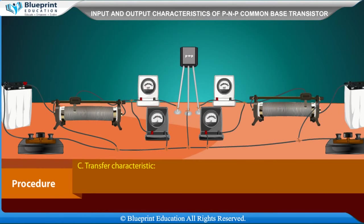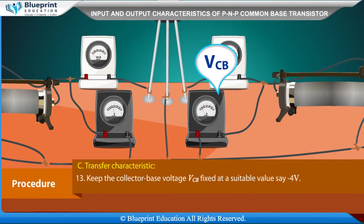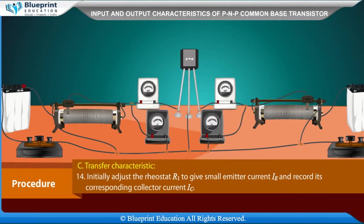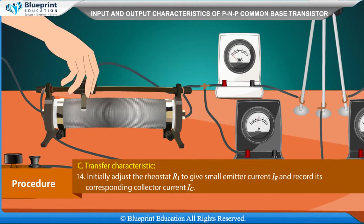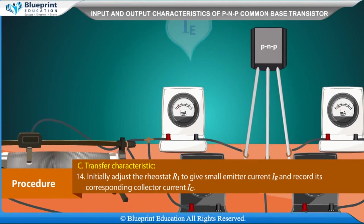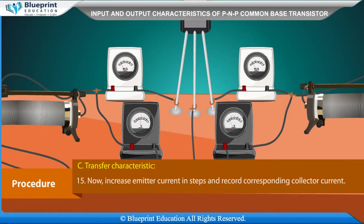Transfer Characteristic: Keep the collector-base voltage VCB fixed at a suitable value, say minus 4V. Initially adjust rheostat R1 to give a small emitter current IE and record the corresponding collector current IC. Then increase emitter current in steps and record the corresponding collector current.